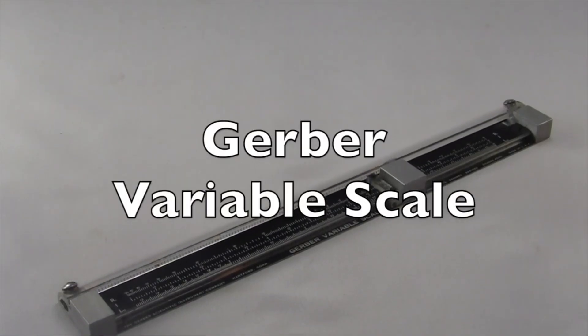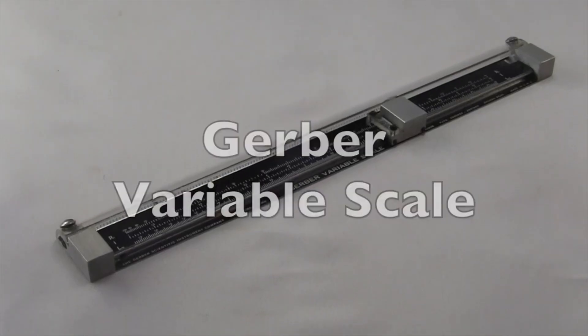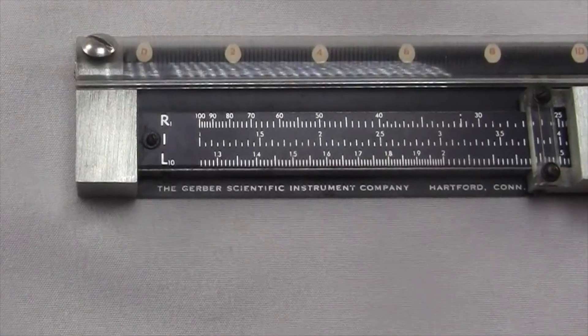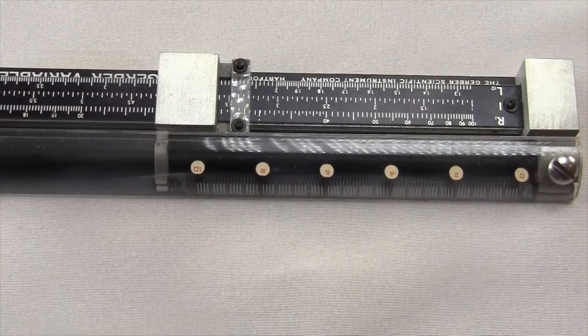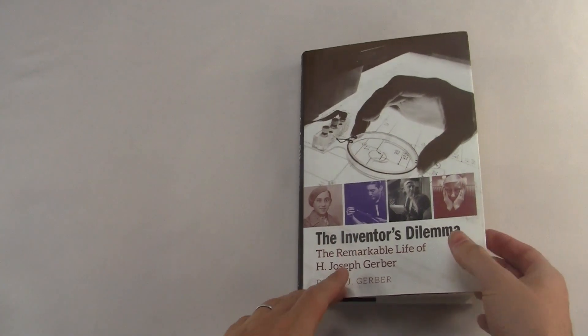I actually consider myself a bit of a Gerber enthusiast. I already did a video about his flagship product, the Gerber variable scale, which was a kind of stretchable ruler. I'm such a Gerber fan, I actually read the book, The Inventor's Dilemma, The Remarkable Life of H. Joseph Gerber, written by his son, David Gerber.